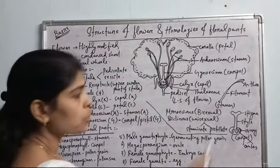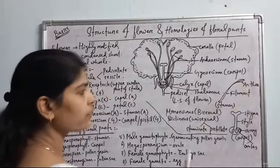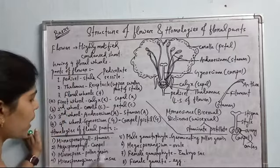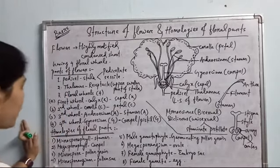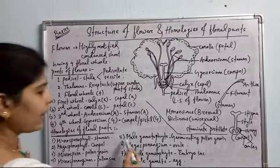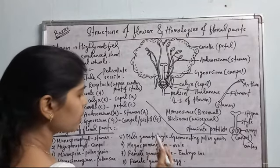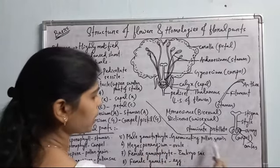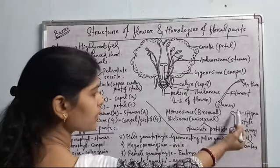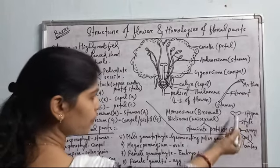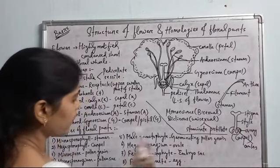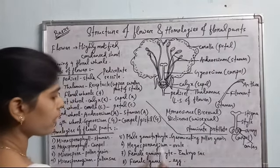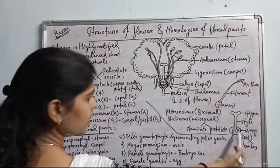Microsporangium represents the pollen sac. There are normally four pollen sacs present in an anther — the anther is dithecous, and each theca or chamber contains two pollen sacs. In the transverse section (TS) of an anther, four microsporangia or pollen sacs will be observed. Male gametophyte is nothing but the germinating pollen grain. When the pollen grain falls on the stigma and germinates depending on compatibility, it is called the male gametophyte. Similarly, megasporangium is the ovule.